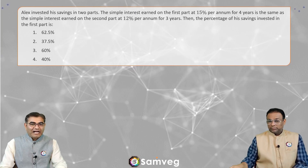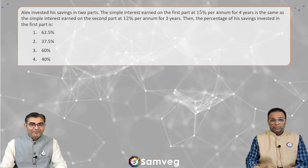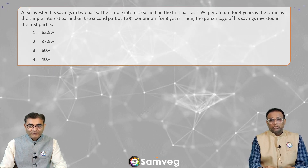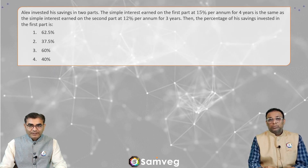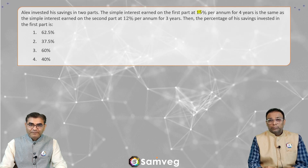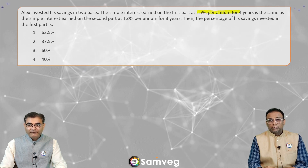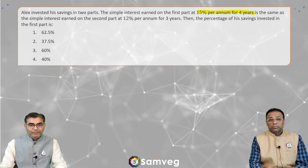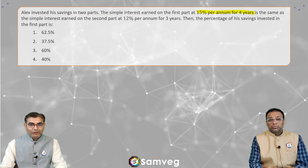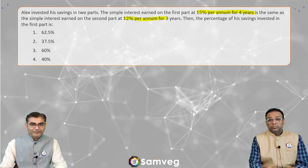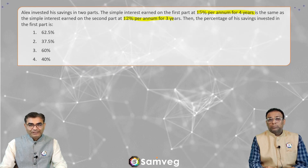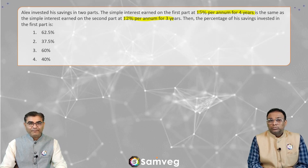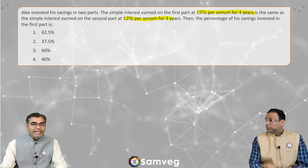So, here is the question on our screen. Alex invested his savings in two parts. The simple interest earned on the first part at 15% per annum for four years is the same as the simple interest earned on the second part at 12% per annum for three years. Then the percentage of his savings invested in the first part is?